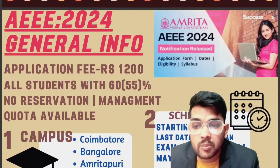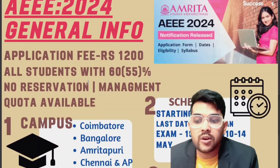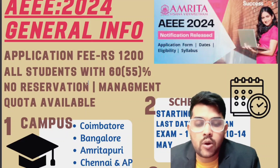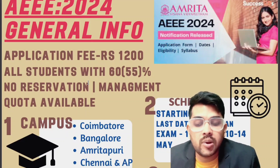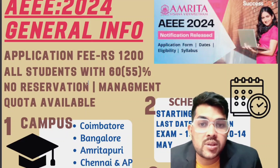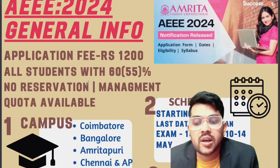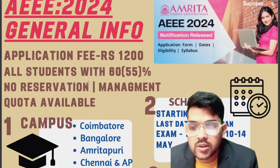The campuses available are Coimbatore, Bangalore, Amritapuri, Chennai, Amaravati, and Nagercoil. There is a new campus available in Tamil Nadu, so now in Tamil Nadu there are three campuses: Coimbatore, Chennai, and Nagercoil.